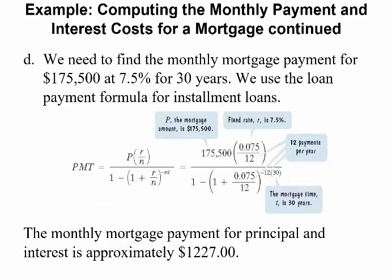How much are you going to pay as your monthly mortgage payment? You're borrowing $175,500 at 7.5% for 30 years. Using the loan payment formula for installment loans — the same formula we used for car loans — take $175,500, multiply it by the rate divided by 12, divide all that by 1 minus (1 plus 0.075 divided by 12) raised to the negative 12 times 30 power. The monthly mortgage payment for principal and interest comes out to approximately $1,227 a month.